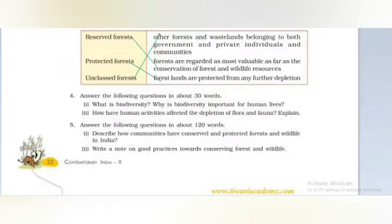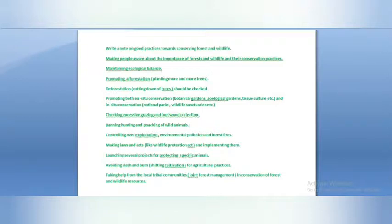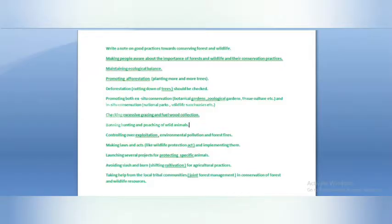Write a note on good practices towards conserving forest and wildlife. The answer includes: making people aware about the importance of forest and wildlife conservation, maintaining ecological balance, promoting afforestation and planting more trees, checking deforestation, promoting ex-situ conservation such as botanical gardens and tissue culture, and in-situ conservation like national parks and wildlife sanctuaries. Also: checking excessive grazing and fuel wood collection, banning hunting and poaching, controlling over-exploitation, environmental pollution and forest fires, making laws like the Wildlife Protection Act, launching projects for protecting specific animals, avoiding slash-and-burn shifting cultivation, and taking help from local tribal communities through Joint Forest Management.